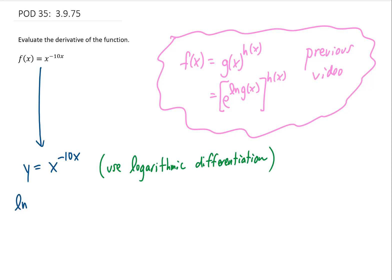We're going to take the natural log of both sides of this function before we take any derivatives. Then we're going to use the rules for logarithms to rewrite this right-hand side. We know that if inside an argument of a logarithm there is an exponent, we can take that exponent and move it out in front of the logarithm.